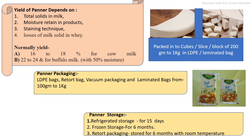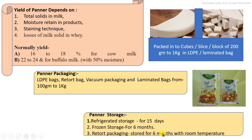After preparation of the paneer, proper packaging is required, carried out using LDPE bags, retort bags, vacuum packaging system, or laminated bag systems, as per the needs of the customers. Storage of the paneer after preparation must be properly packaged and stored under refrigeration conditions for at least 15 days, and frozen conditions for a maximum of 6 months. Retort packaging system is also used as an aseptic technique for storage under normal conditions for at least 6 months.